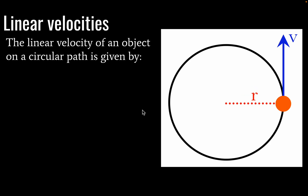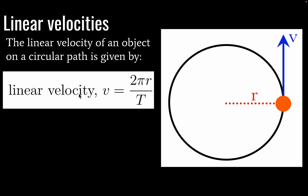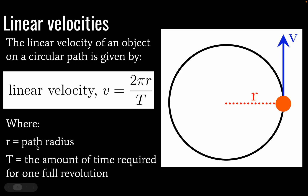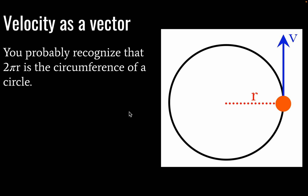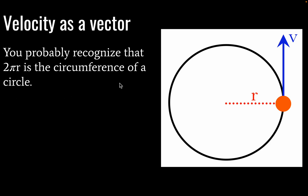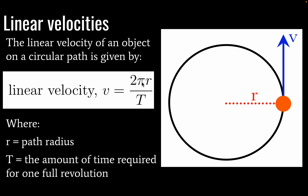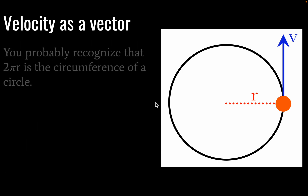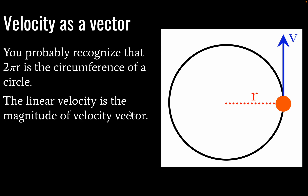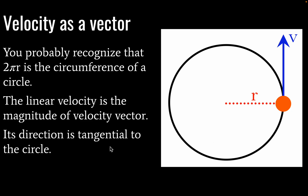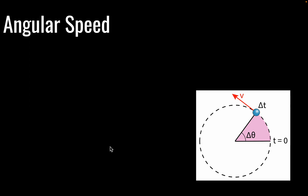Linear velocity of an object on a circular path will be given by this equation, where v is equal to 2πr divided by T. Identifying our variables: r is our path radius, and T is the amount of time required for one full revolution. You probably recognize the circumference of a circle in that equation as well — circumference distance divided by time gives meters per second, which is what we would expect for the unit of velocity. Our linear velocity is the magnitude of our velocity vector, and its direction is tangential to the circle.